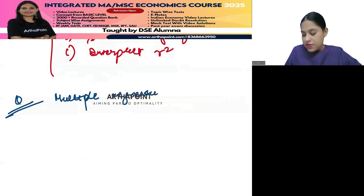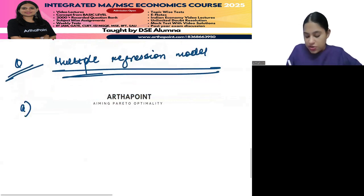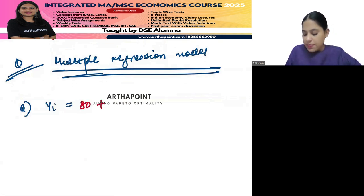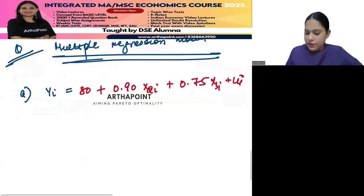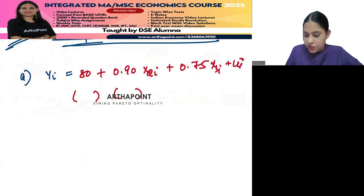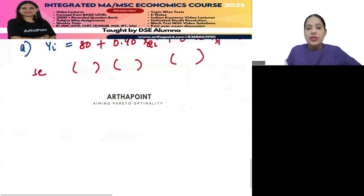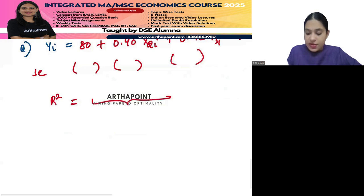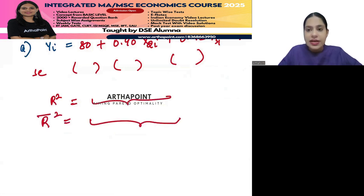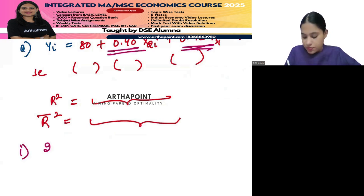The multiple regression model question can be asked in many ways. For example, they will give you Yi = 80 + 0.92·X2i + 0.75·X3i + ui. Then they will give you standard errors, R-squared value, and R-bar-squared value. They will first ask you to interpret the individual coefficients of the multiple regression model.